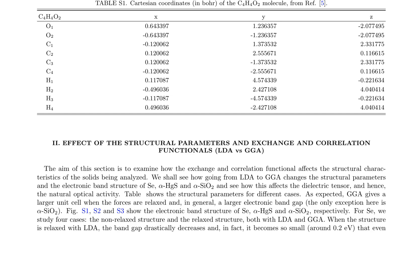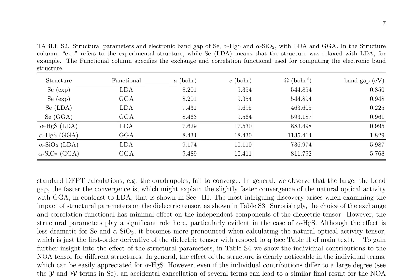When the structure of Se is relaxed with LDA, the band gap drastically decreases, becoming so small — around 0.2 eV — that even the top of the valence band and the bottom of the conduction band are not well defined. The study highlights the importance of considering structural parameters and exchange-correlation functionals in the calculation of the dielectric tensor and natural optical activity. A comparison of structural parameters and electronic band gaps for Se, α-HgS, and α-SiO2 using LDA and GGA functionals is provided in Table S2.